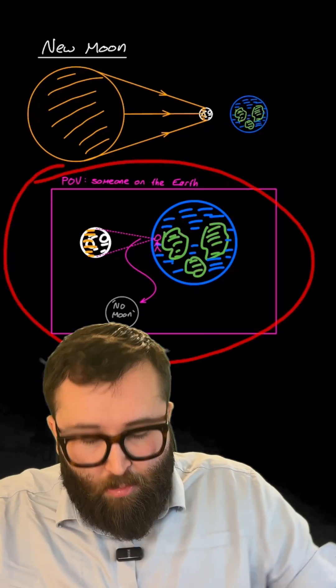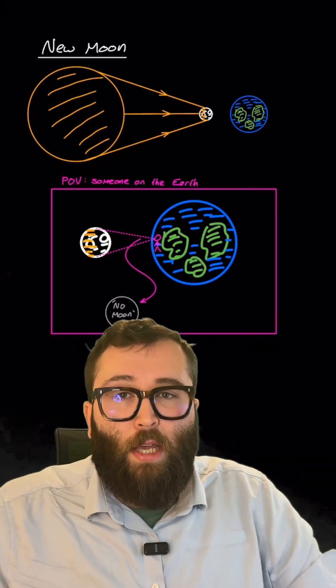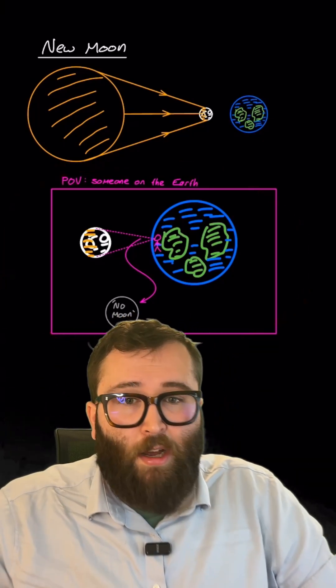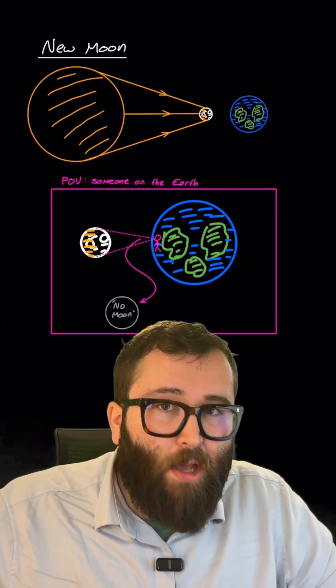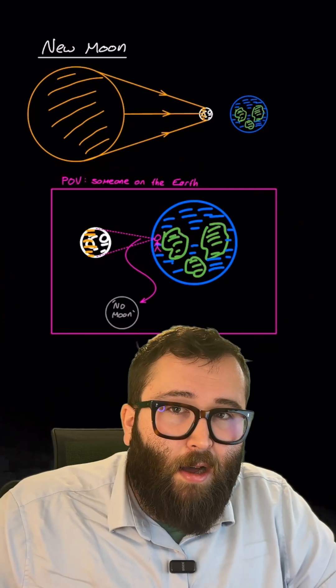If you look here at the perspective of someone on the earth looking up at a new moon, you'll see that half of the moon is still being lit up. It's just that the half we are looking at happens to be dark.